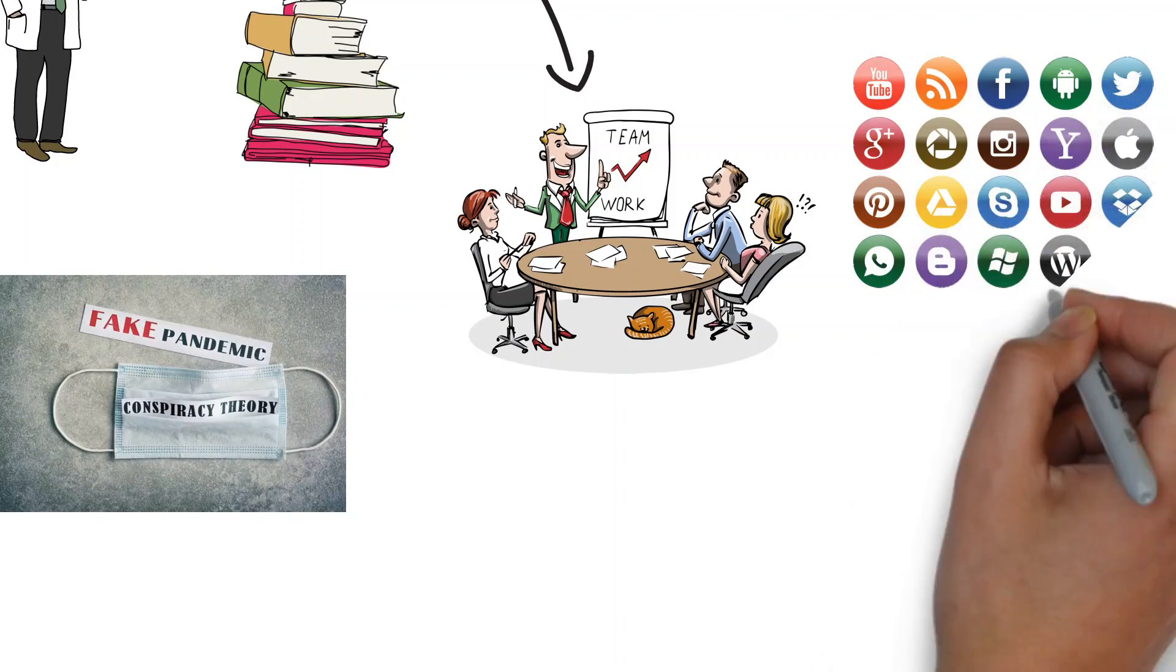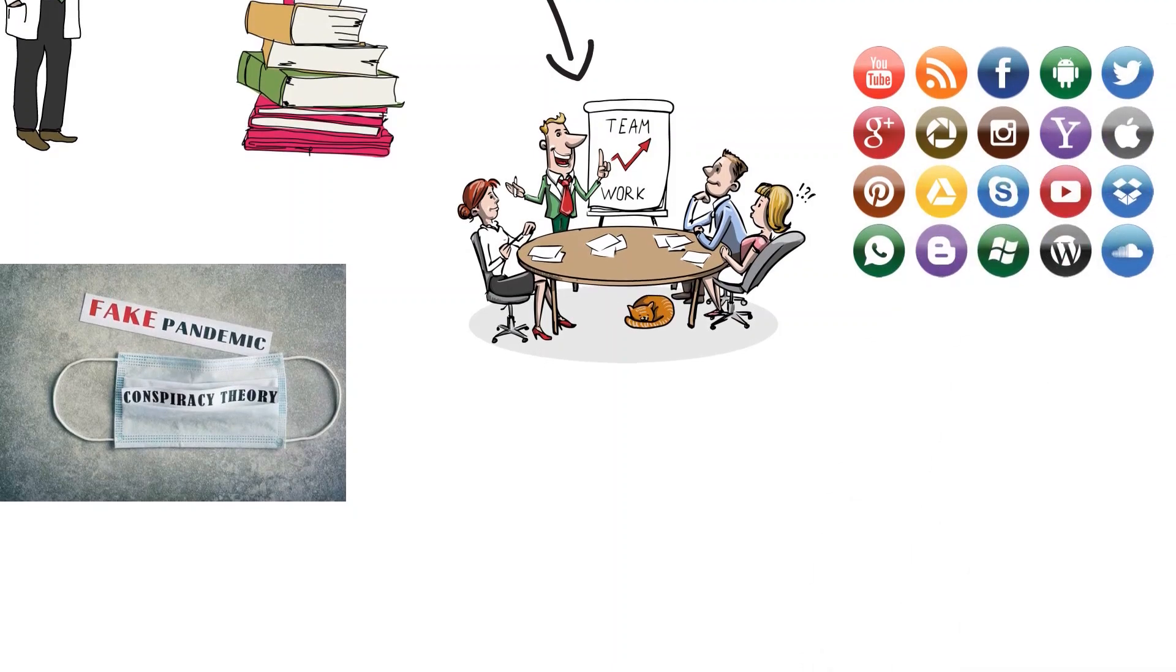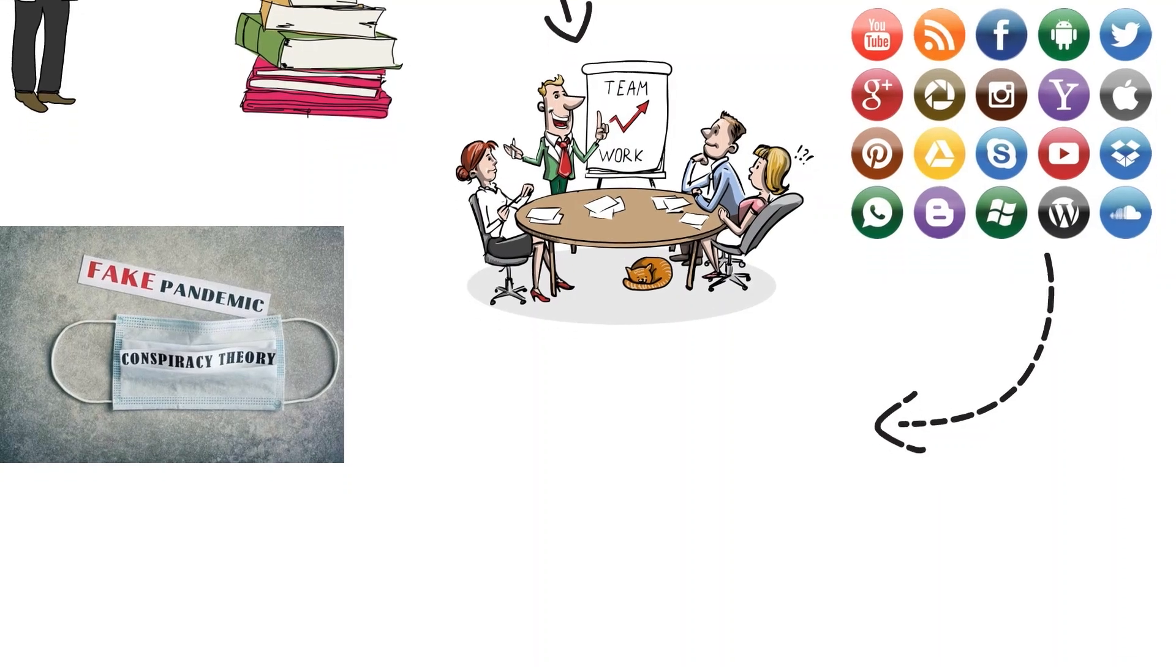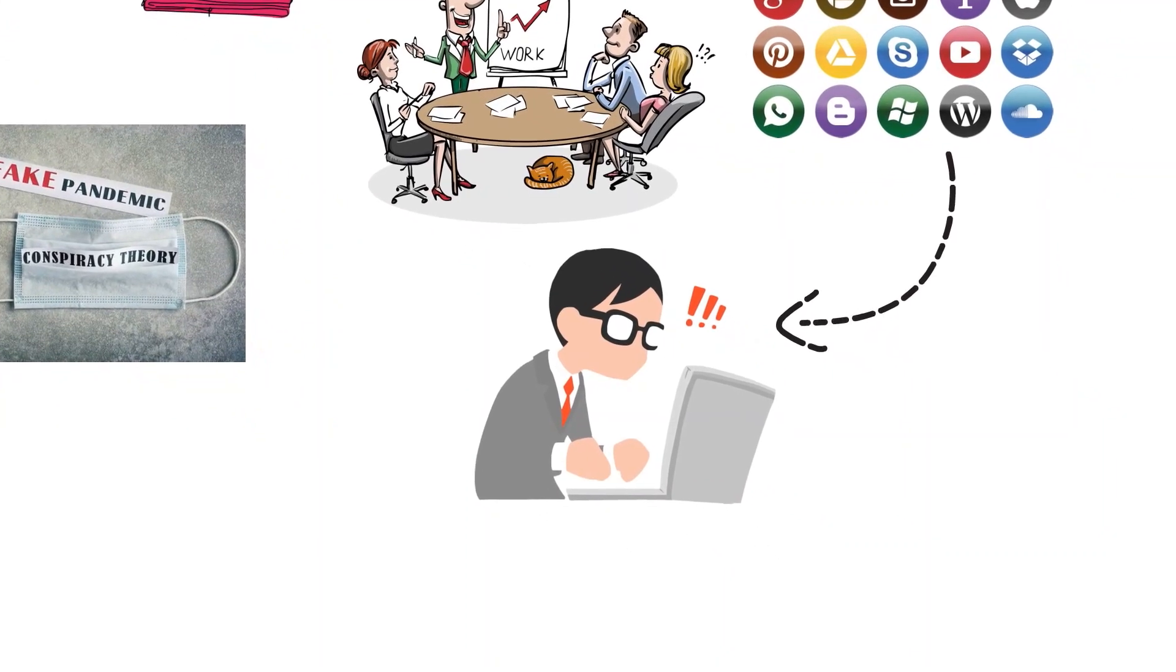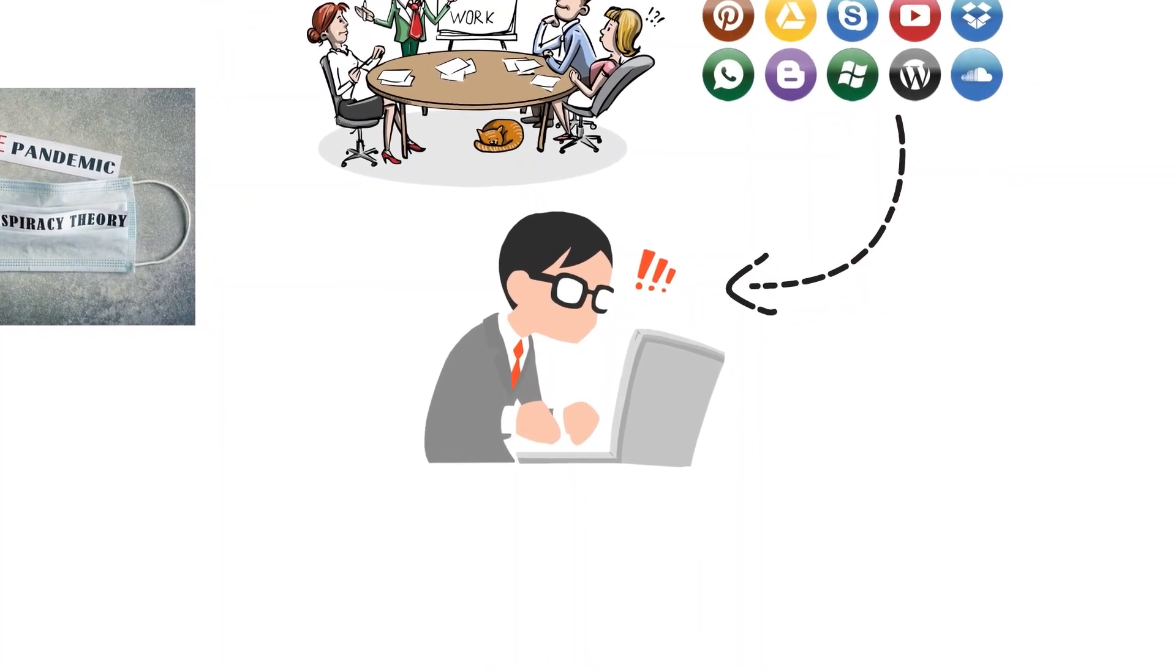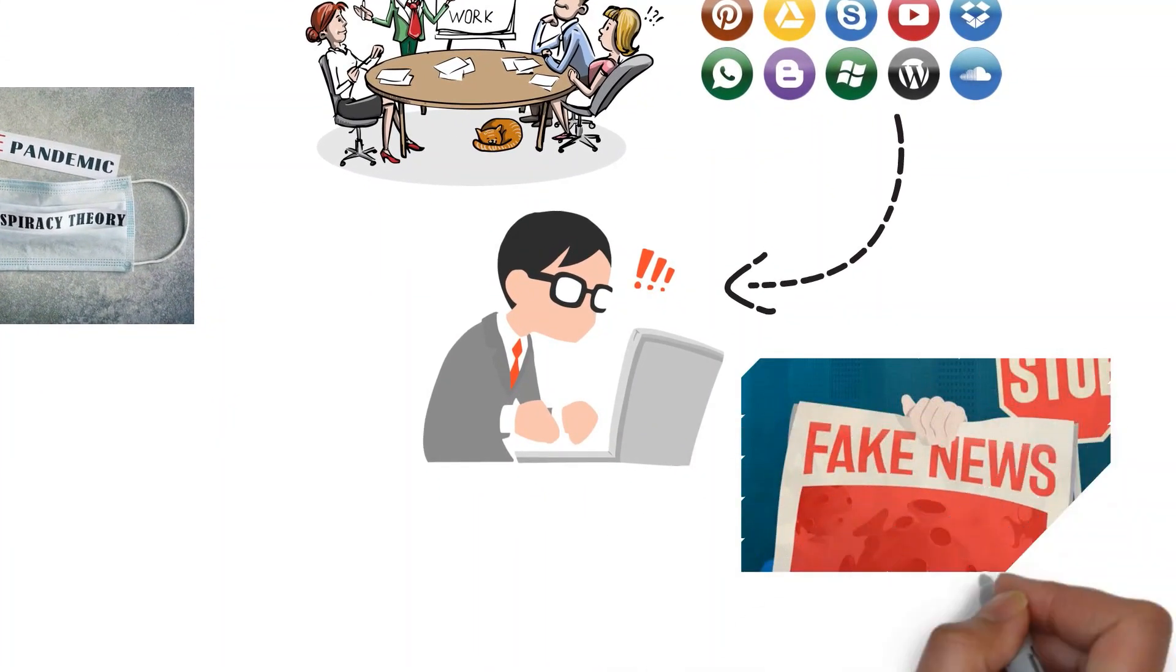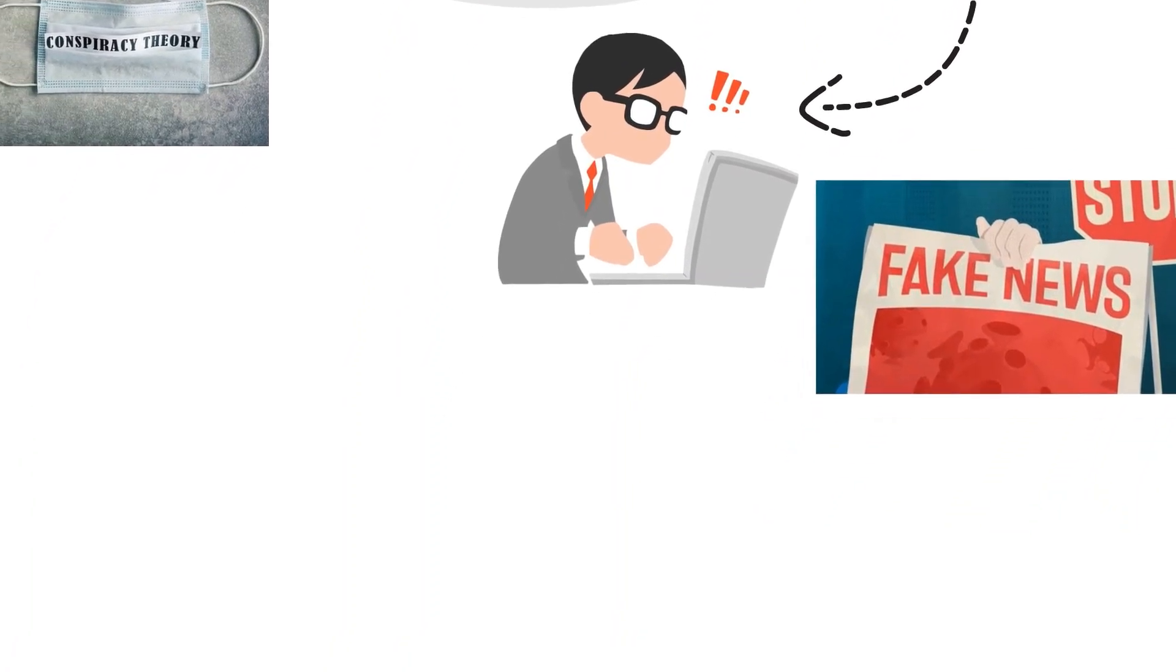Social media platforms, where misinformation can spread rapidly, are starting to experiment with removing unreliable posts. A 2019 study found that people trust mainstream news sources more than hyper-partisan or fake sites, which means social media platforms can help if they prioritize posts from credible sources, experts say.